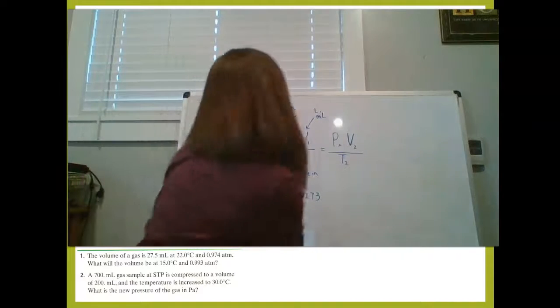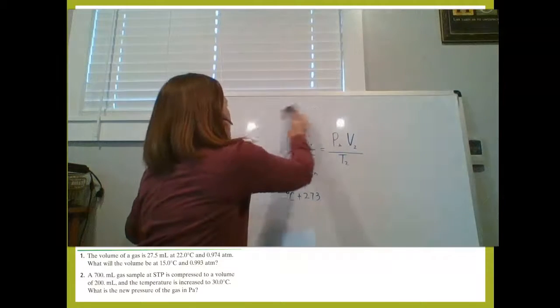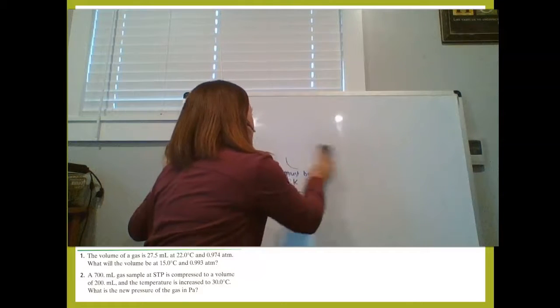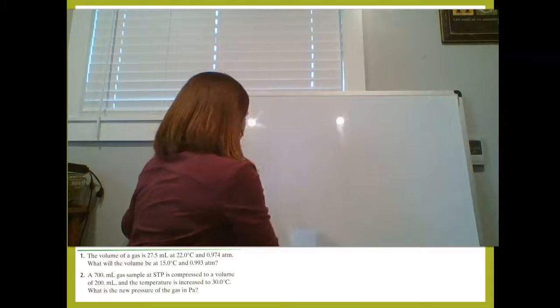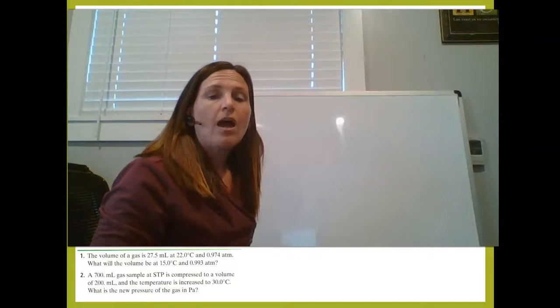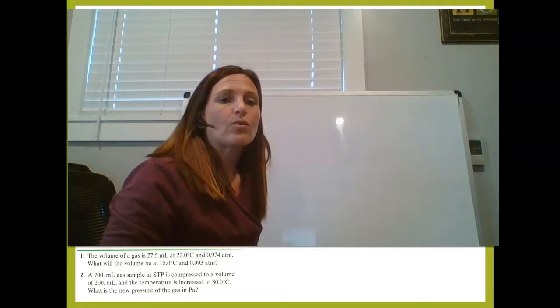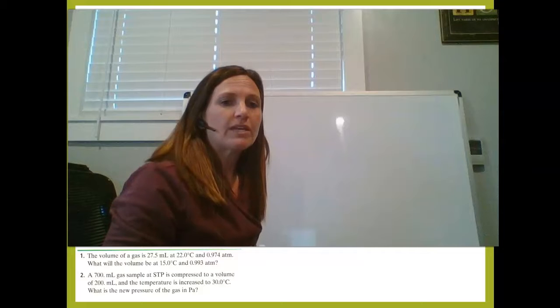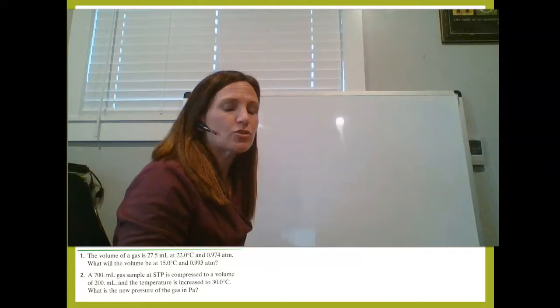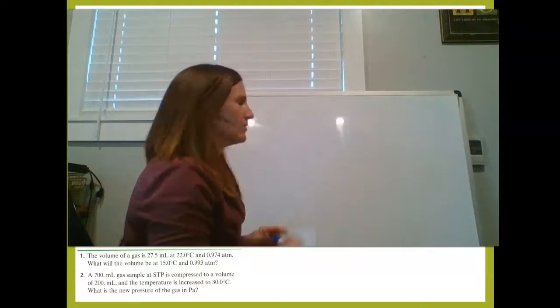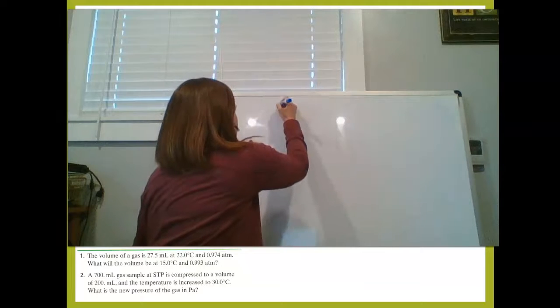So for the first problem, what we're going to do is start by writing down what we know from the problem as we usually do. We're going to start by writing the volume of the gas is 27.5 milliliters. So that is V1, 27.5 milliliters.